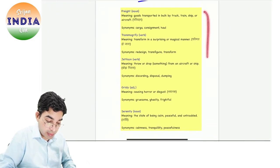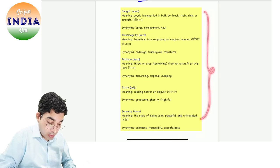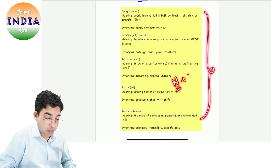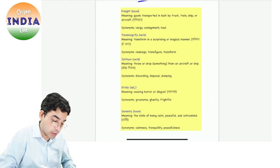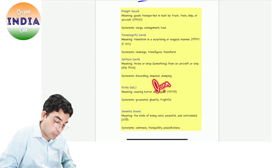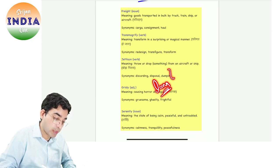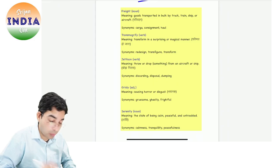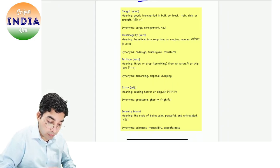Ye vocabulary words hain aaj ke liye. If you come across any other important word, write down that word along with its meaning in the comment section below. Language proficiency bahut zaroori hai — bina language proficiency ke ye exam clear karna bahut difficult hai. So work on your language. Everyday means everyday.